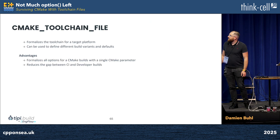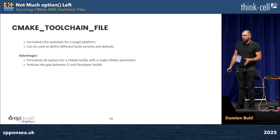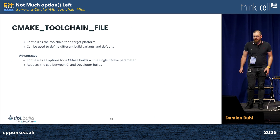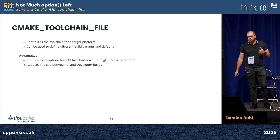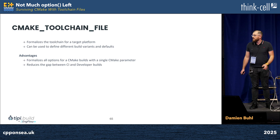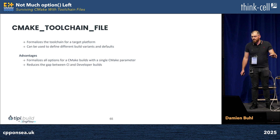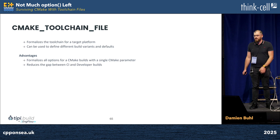Essentially, a CMake toolchain file is very nice because you can put all your build options into one file and just pass one parameter to your build, so that you don't need to repeat a massive list of parameters. You can use that everywhere to reduce the differences between different runs, between different developers, and also between your CI and developer builds.